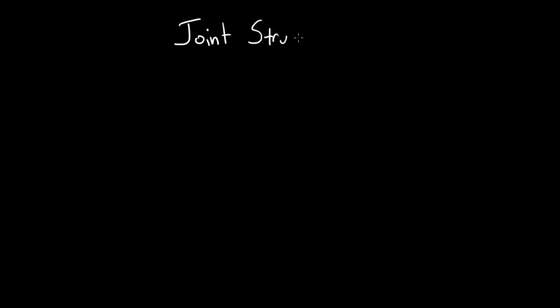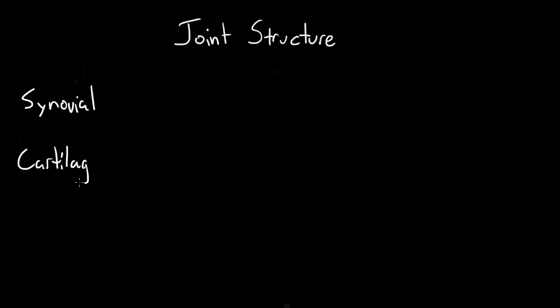The structure of joints. The simplest definition of a joint is the connection between two bones. When most people think of joints, they think of the big mobile joints, like the shoulder or the knee. These are just one type of joint that we're going to talk about. While there are a few ways to classify joints, the structural definition is probably the most useful. There are three major types: synovial, cartilaginous, and fibrous. Each type has a basic structure and a specific function in your body.